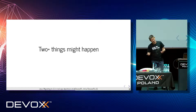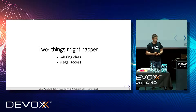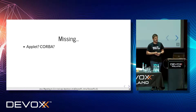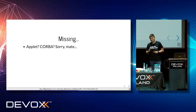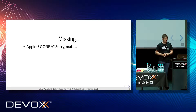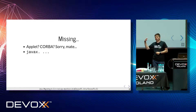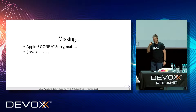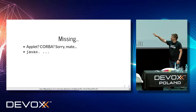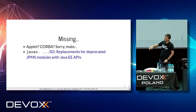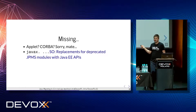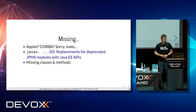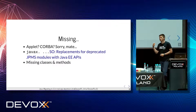Two things that might happen most importantly: missing class and illegal access. If you have missing Applet or CORBA, I'm really sorry — there's no way to upgrade. If you're missing anything from javax, there's a brilliant post from Nikolai Parlog explaining what dependencies to add to your Maven or Gradle to make it pass the build and run in production again. If you have missing classes or methods — class not found or method not found exceptions — it most probably means you haven't upgraded your dependencies. Trying to run an application still using Hibernate 4 on Java 11 might not be the best idea.